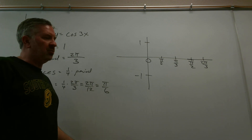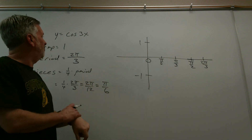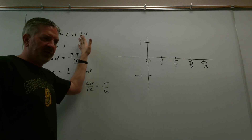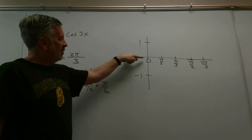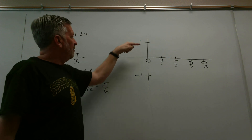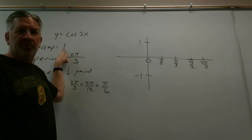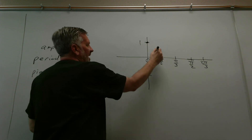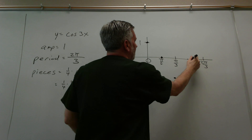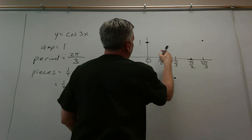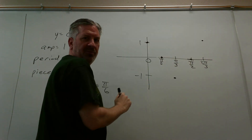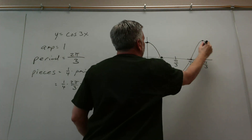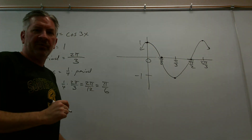Now let's sketch the graph. The amplitude is one, so the range is from minus one to one. Once I have my numbers in place, I ask: what does the original cosine graph do on the y-axis? It crosses at (0, 1). We didn't change the amplitude and we didn't reflect, so it's still a high at zero. Then: high, middle, low, middle, high — be careful not to skip over one of your important places. That's the graph of y equals cosine(3x).